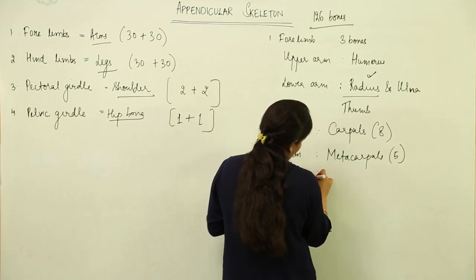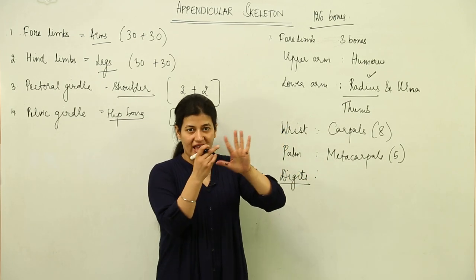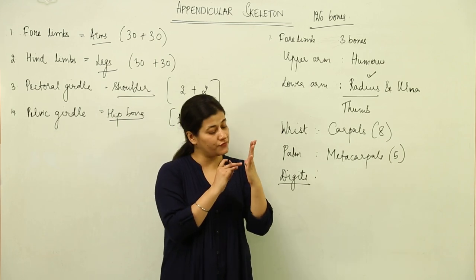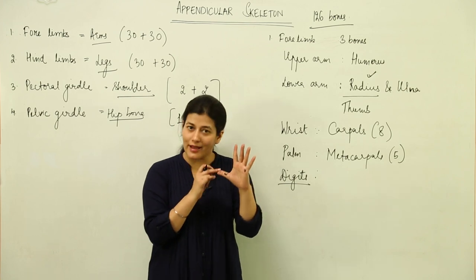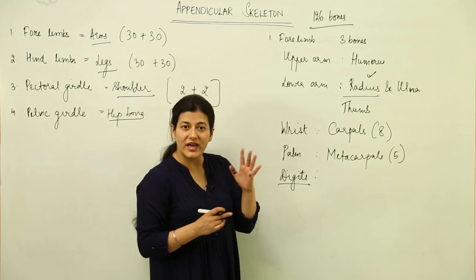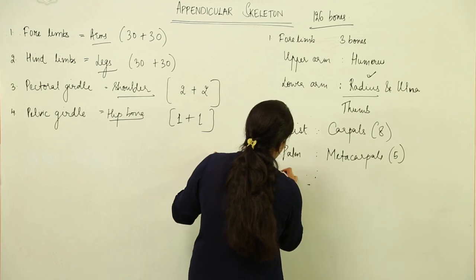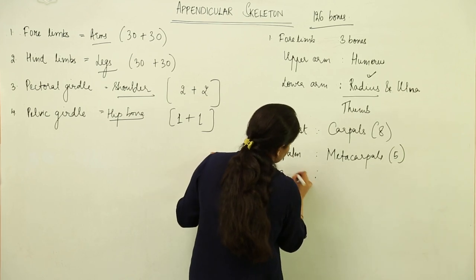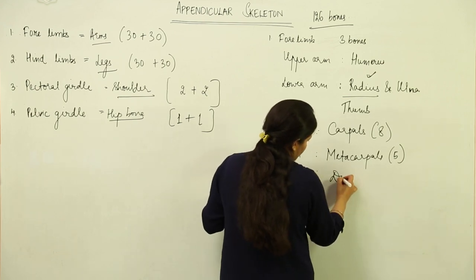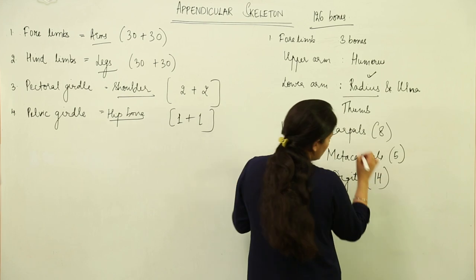The digits, or fingers and thumb, make up the final part of the hand. Each finger has three bones, while the thumb has only two. These are referred to as digits, and there are 14 in total — two for the thumb and twelve for the four fingers.